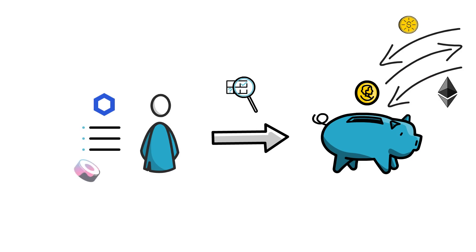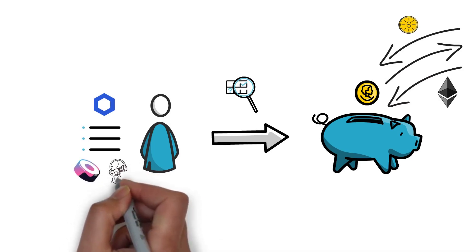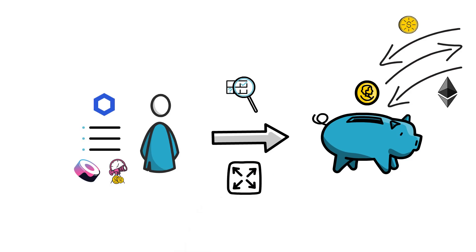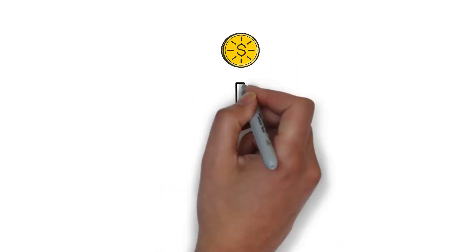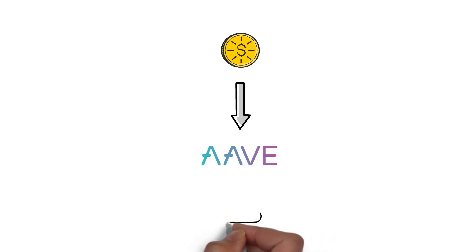However, the Sushi team is working on adding their own TWAP price oracle that would expand the set of available price feeds.